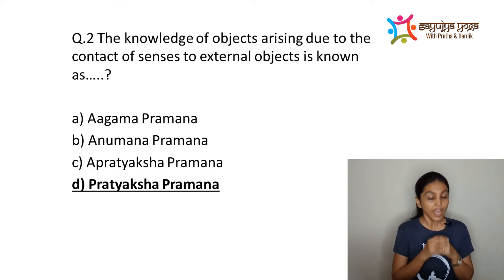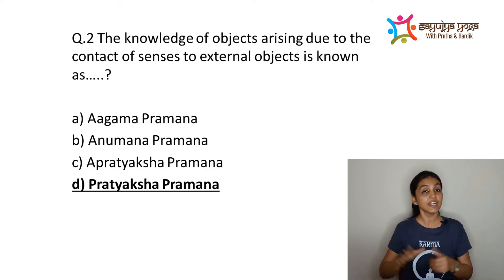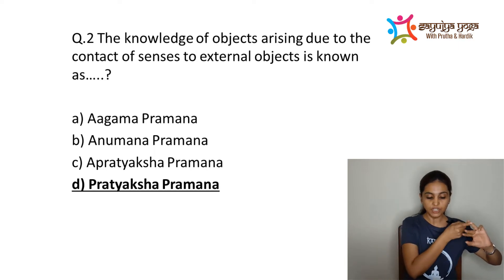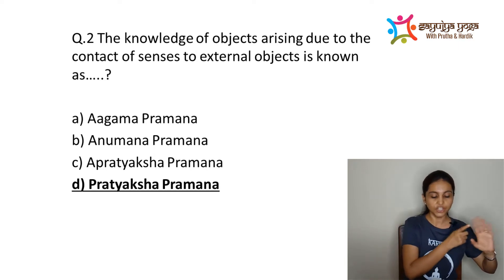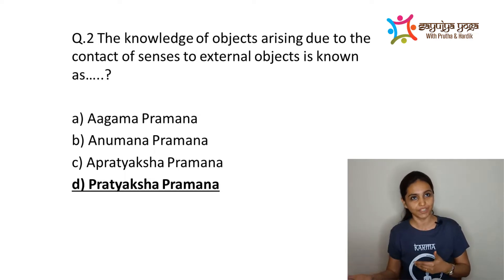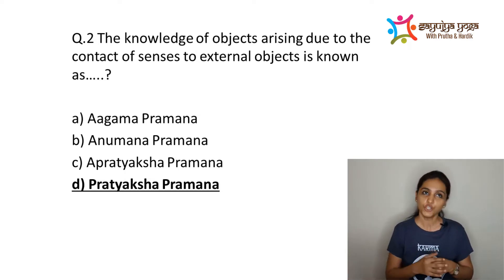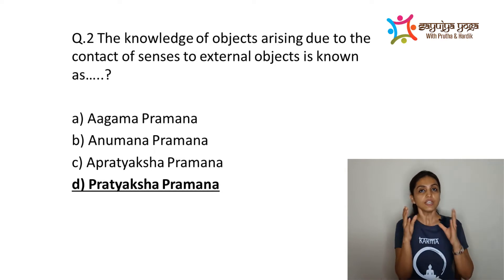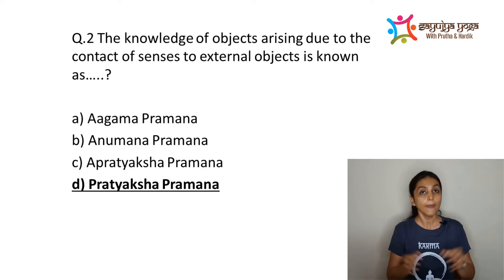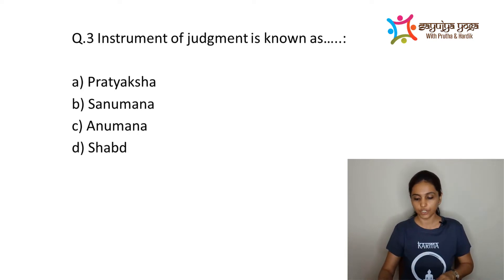Through Pratyaksha Pramana, what kind of Gnan is achieved? The answer is Vishesha Gnan. Also remember there are six types of Pratyaksha: Shavana, Sparshana, Chakshusha, Rasana, Graana and Manasa. Note that these six types of Pratyaksha are not mentioned in Patanjali Yoga Darshan, but you should have knowledge of them.